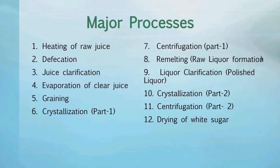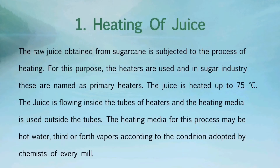8. Remelting or raw liquor formation. 9. Liquor clarification. 10. Crystallization part 2. 11. Centrifugation part 2. 12. Drying of white sugar. Now, we briefly understand all processes one by one. And it is to be noted that in coming videos I will explain all processes one by one in detail.